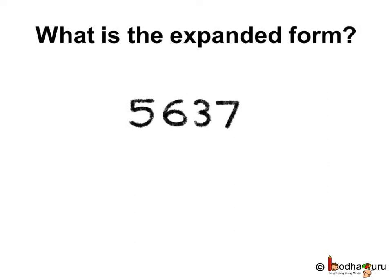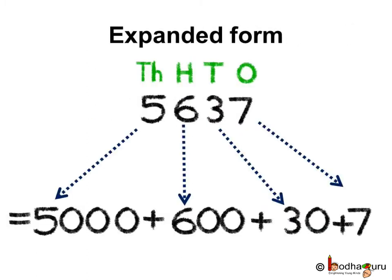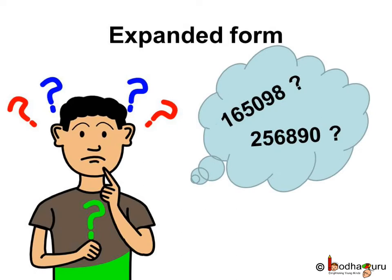To refresh our memories, what is the expanded form of 5637? If we see the place value of each digit in 5637, there are five thousands, six hundreds, three tens and seven ones. So 5637 is equal to 5000 plus 600 plus 30 plus 7.